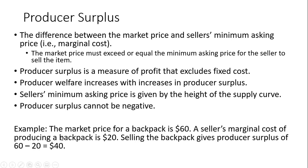Here's a simple example: the market price for a backpack is $60, and a seller's marginal cost for producing a backpack is $20. Selling the backpack gives producer surplus of $40, so this seller got $40 more than his or her minimum asking price from selling the backpack.